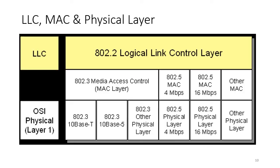This diagram shows at the bottom the OSI physical layer with IEEE specs for different physical media. On top of that is the MAC layer with different IEEE specifications depending on speed and physical media. On top of that is the LLC layer — the logical link control, a software component that builds the link between the data link layer and the network layer.